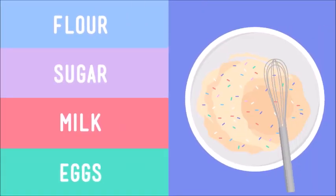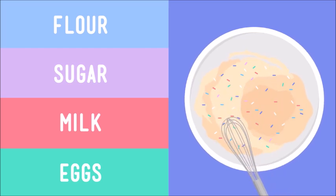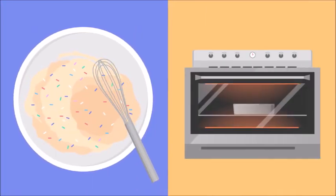When we mix the ingredients of a cake, we're mixing together different kinds of matter. Say you have flour, sugar, milk, and eggs. When you put them in a bowl and stir, you're mixing several different substances together to make cake batter. And when you pop this mixture into the oven,